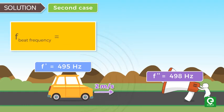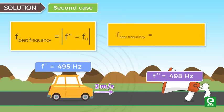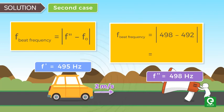Therefore, beat frequency is given by |f'' - f₀| = |498 - 492| = 6 Hz. Therefore, the correct answer is 6 Hz. Please like,